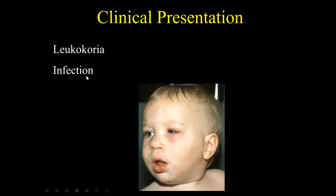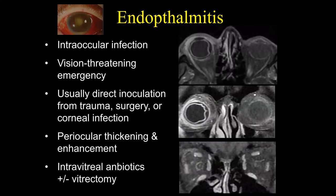Having discussed leukocoria, let's now talk about infections involving the orbit and periorbital area. The first infection is endophthalmitis — an intraocular infection and a vision-threatening emergency.